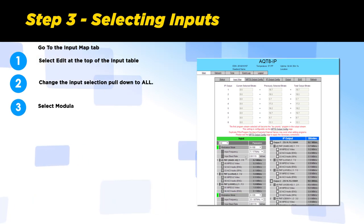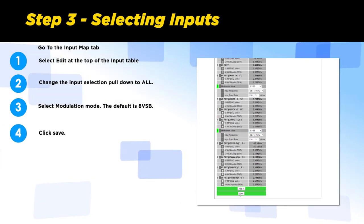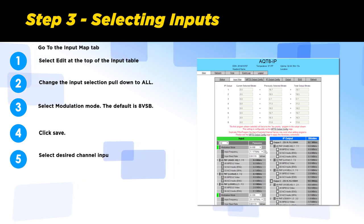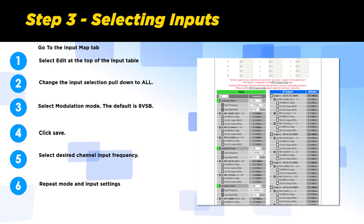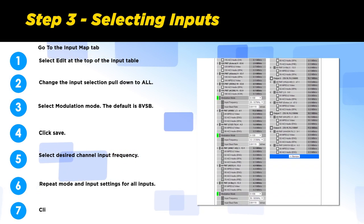Select modulation mode. In our application, we're using 8 VSB mode. Click Save. Select desired channel input frequencies. Repeat modulation mode and input settings for all inputs. Click Save.